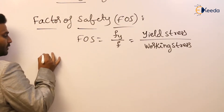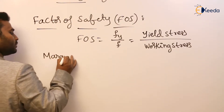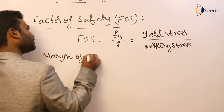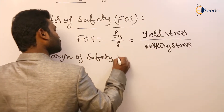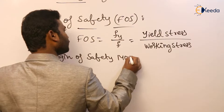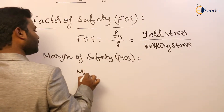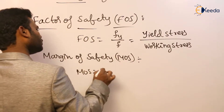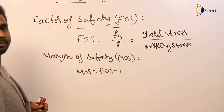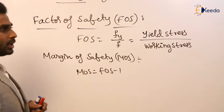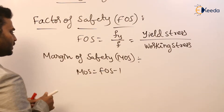Next, there is one more definition: margin of safety. Margin of safety is represented as MOS. MOS is equal to factor of safety minus one.